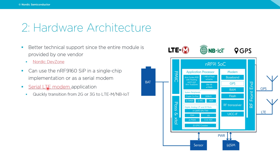We have a serial LTE modem application where you can essentially use the whole SIP as a modem just by sending AT commands. That can be useful if you quickly want to transition from a 2G or 3G application to LTE-M / narrowband IoT, and then later transition to using the NRF 9160 SIP as a full single-chip solution.